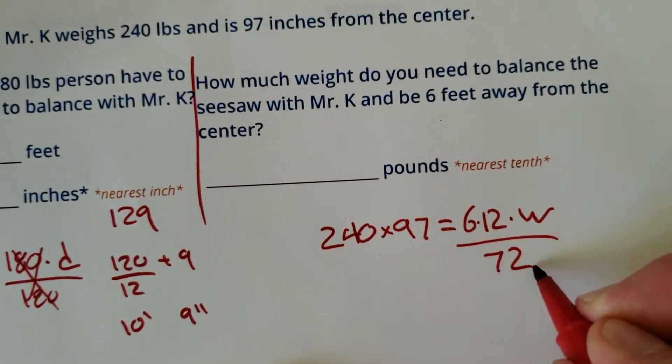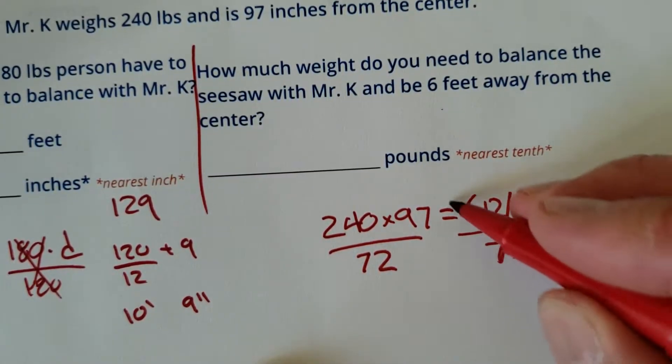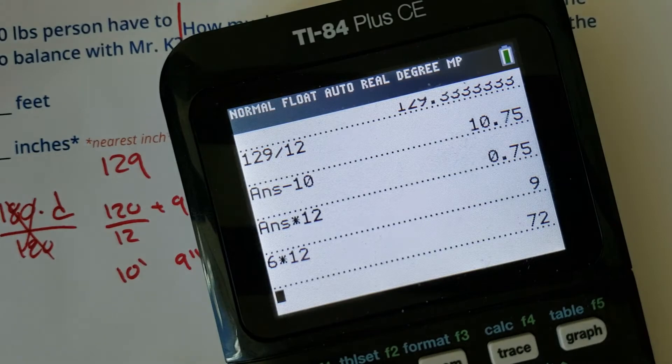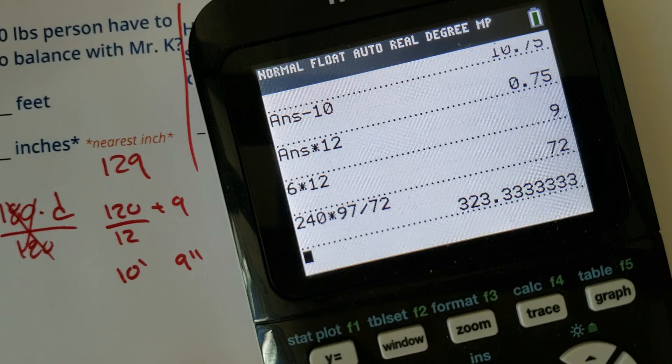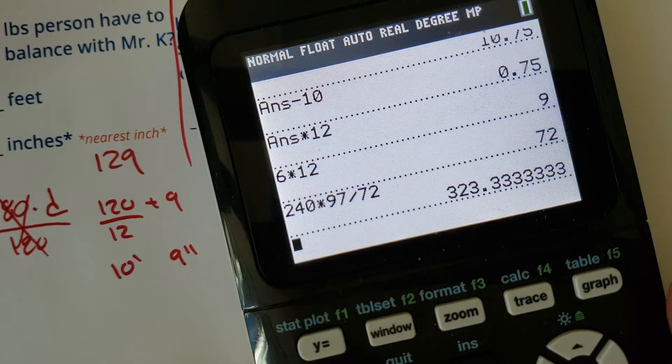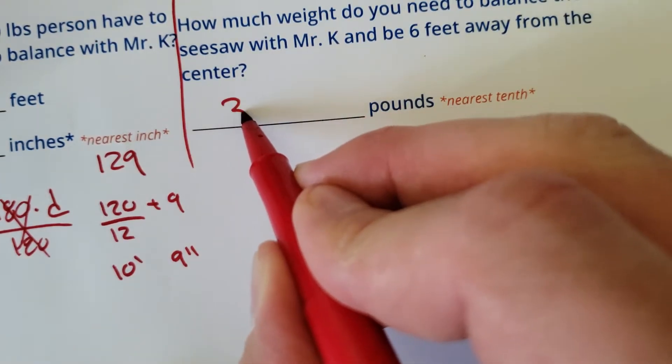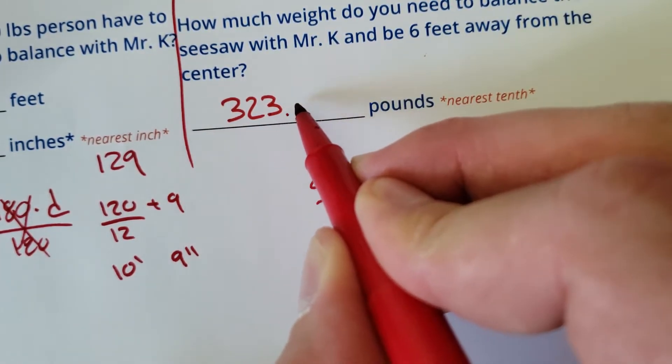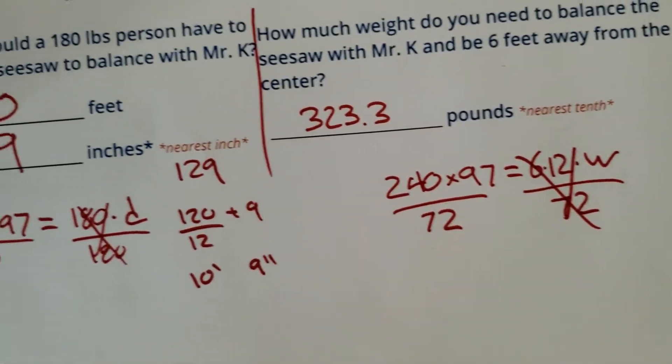So if I divide both sides by 72, I should get the weight that the person needs. Here we go. 240 times 97 divided by, what was it again? It was 72. 323.3 pounds. What does it say? Nearest tenth. They need to be 323 pounds and a 0.3. There we go. 0.3 feet in inches is going to be a 0.3. All right, cool.